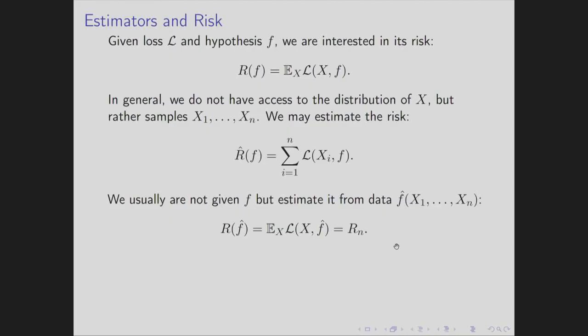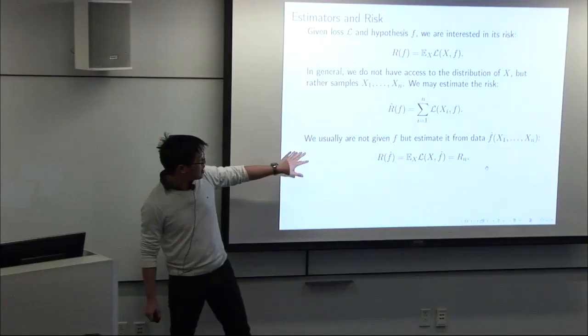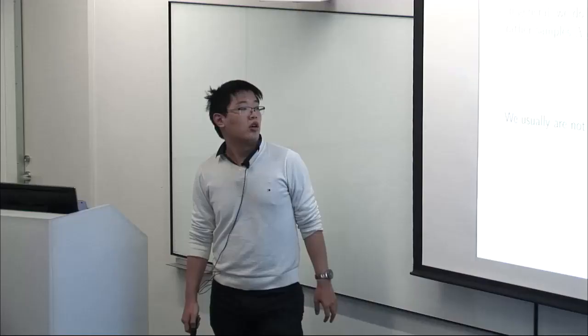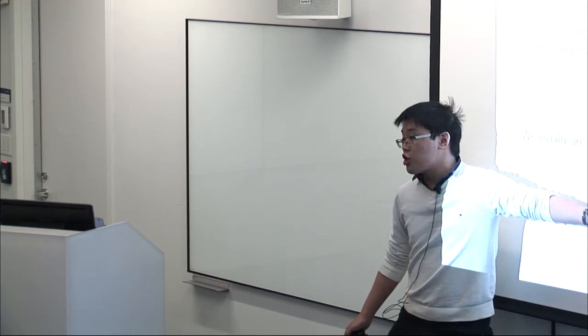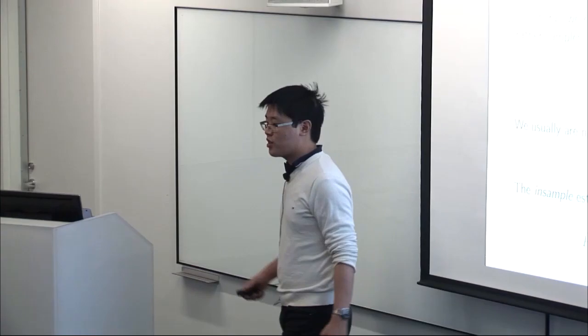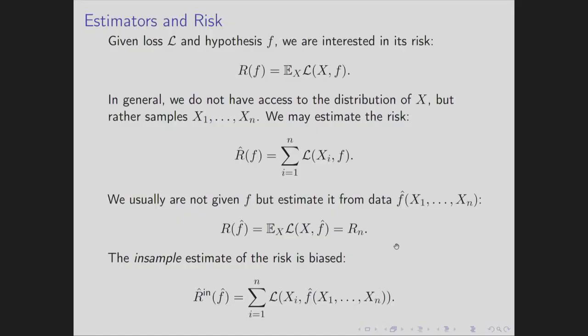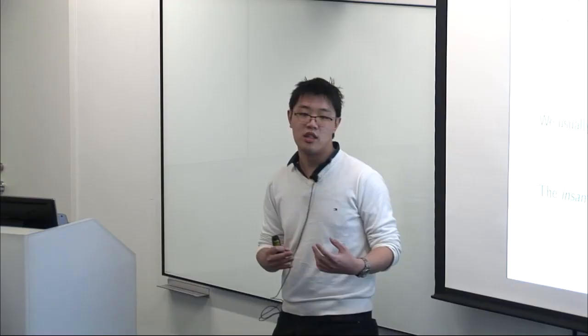Usually we don't care about a specific fixed hypothesis, but rather we use data to get an estimated hypothesis and then compute the risk from that. The risk of the estimate is defined the same way. The trouble is this involves the data-generating distribution. A naive approach—the in-sample estimate—uses the same data to both estimate your hypothesis and evaluate how you did. Since there's usually minimization involved in estimation, this is biased.